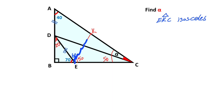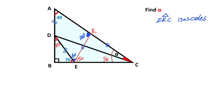Therefore the length of EK must be equal to the length of KE. Next step, we know that the sum of two interior angles is equal to one exterior angle, so here must equal 100 degrees.